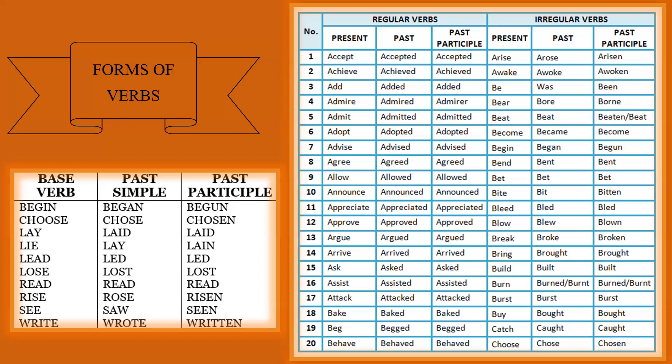Children, today in this slide we learned about the three forms of verb: the base form, the past tense form, and the past participle form. Remember, the base form is the basic form of the verb; the past tense form is used to talk about past actions; and the past participle form is used in perfect tenses or passive voice constructions. Keep practicing, children, and using these forms to become more confident in your English language skills.